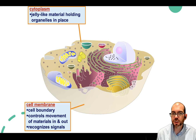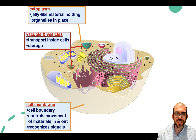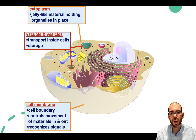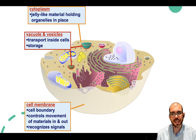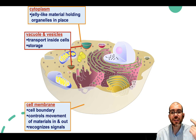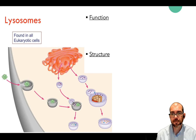On a diagram, vacuoles and vesicles are honestly very difficult to tell apart—you're just looking for small containers. Vacuoles are used for storage; vesicles are used for movement or transport inside the cell.